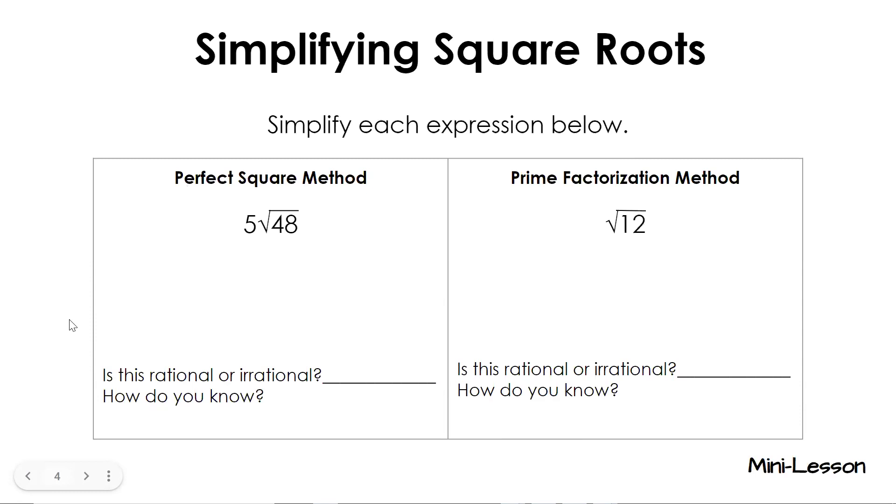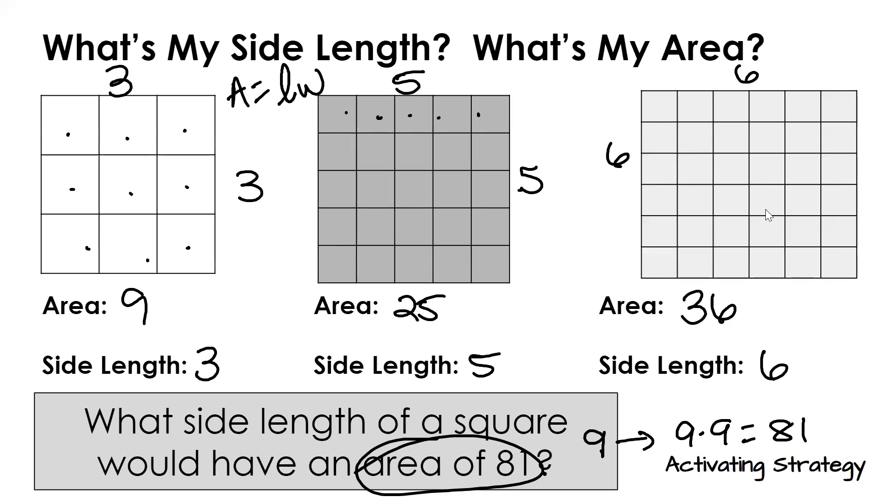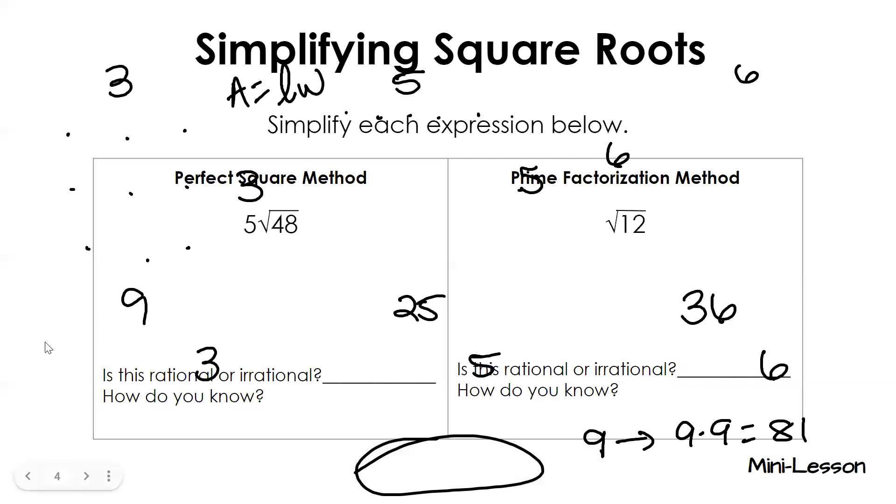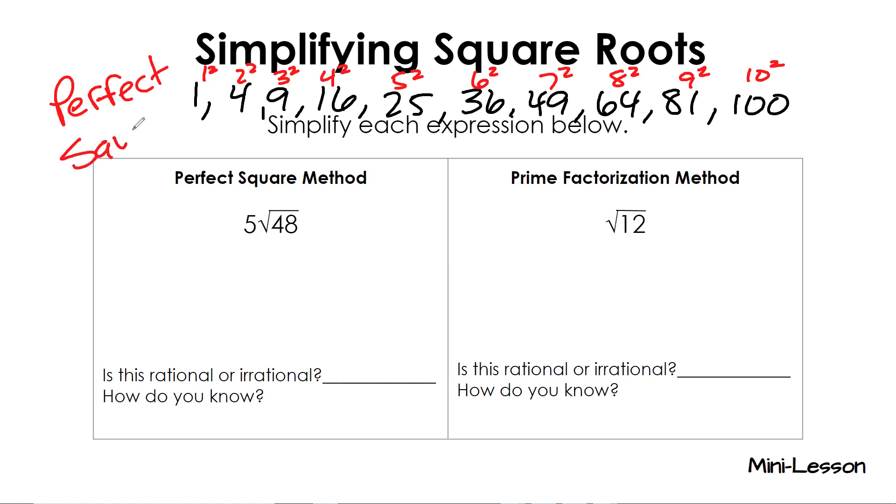There are two different ways to simplify radicals. I'm going to show you both ways. You get to pick which way you want to do. Do you remember this list back in like eighth grade? If I said 1 squared, 2 squared, 3 squared, 4 squared, 5 squared, 6 squared, 7 squared, 8 squared, 9 squared, 10 squared. That's what each one of these things are. These are called perfect squares. Write those on your paper.